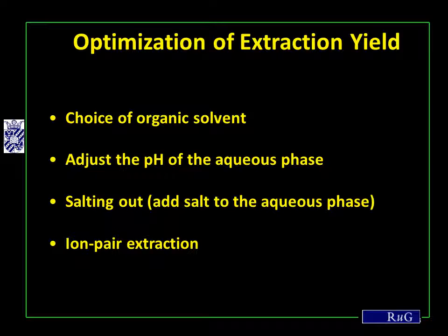The most important parameter is the pH of the aqueous phase. Imagine having a basic drug molecule with an amino group. It is advisable to work at basic pH because then the amino group will not be charged, and the neutral molecule naturally extracts better into an organic solvent than a charged molecule. Alternatively, if your drug molecule has an acidic group which is negatively charged at basic pH, it is better to go to low pH because the carboxylic acid group will be protonated, not charged, and the neutral molecule better extractable into an organic solvent.